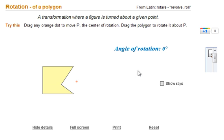A rotation is when you take any shape and you rotate it around a specific point. In this example, we will be using this little red dot as our point and this is our shape.